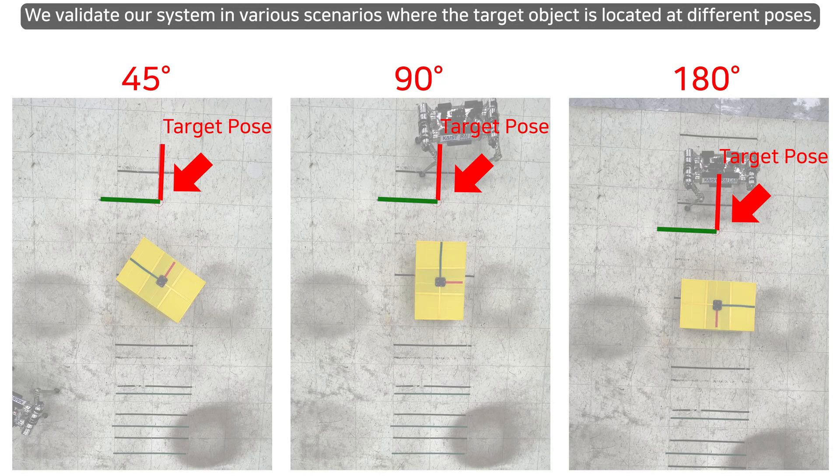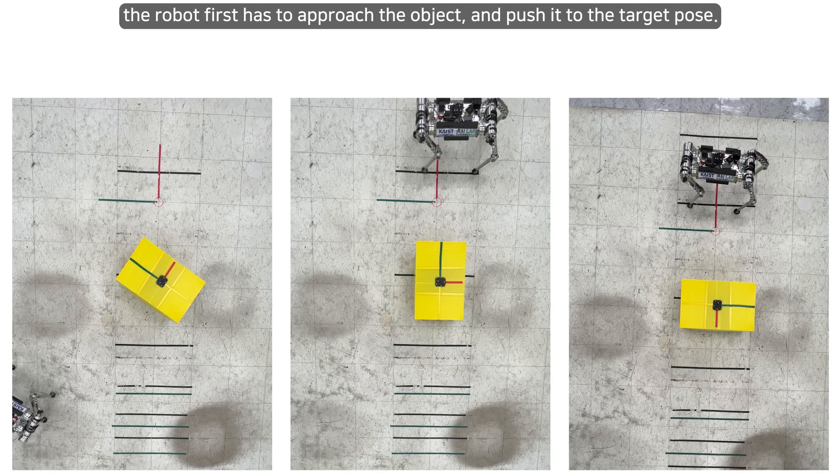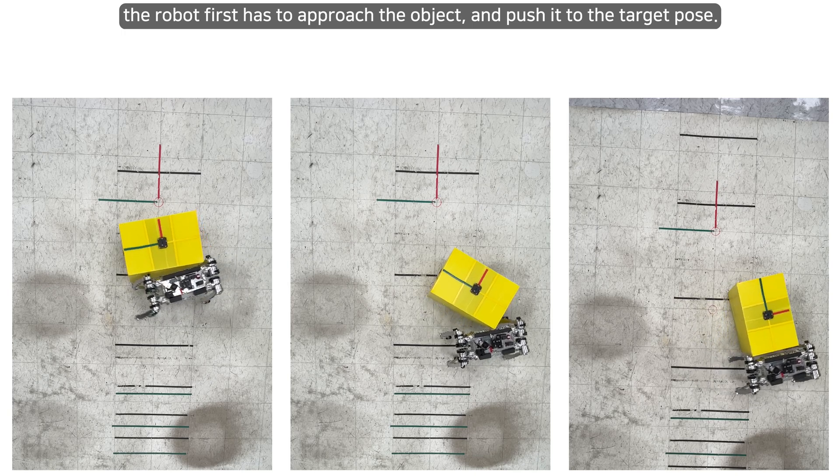We validate our system in various scenarios where the target object is located at different poses. Because of the considerable initial distance between the object and the robot, the robot first has to approach the object and push it to the target pose.